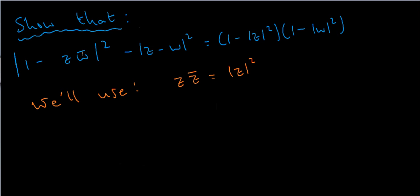In this video we're going to be proving that the absolute value of 1 minus z w conjugate squared, minus the absolute value of z minus w squared, is equal to 1 minus the absolute value of z squared, times 1 minus the absolute value of w squared. In this case z and w are complex numbers.